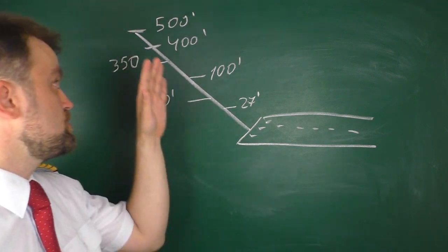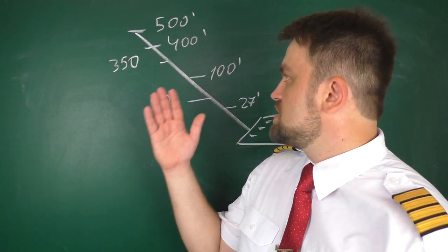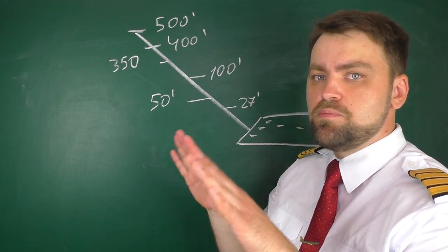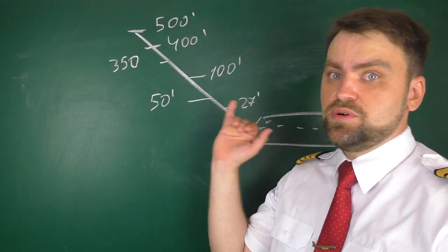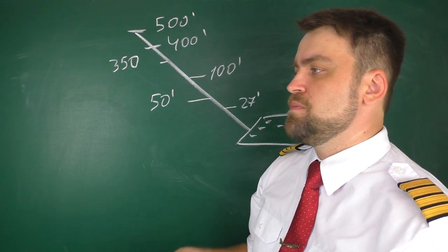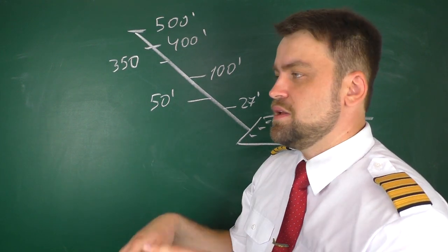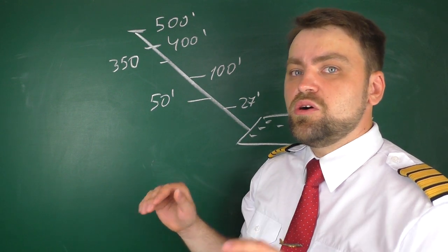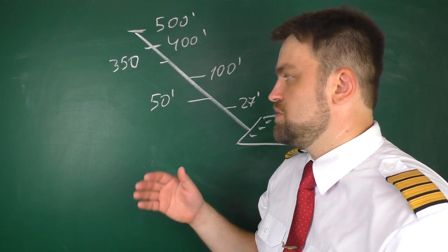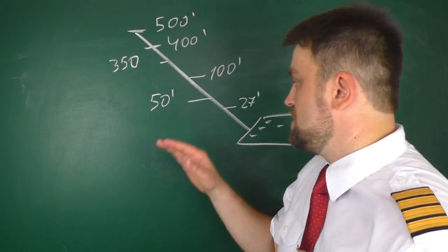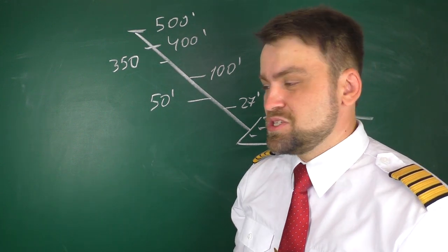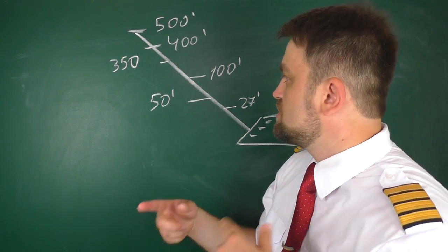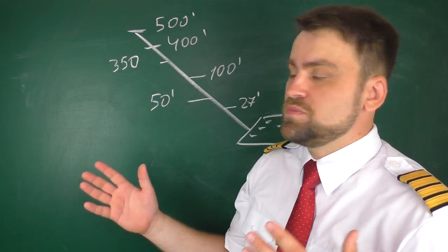Passing 400 feet, the stabilizer trim starts to trim back to create a pitch-up moment for the actual flare maneuver. At 50 feet, the flare maneuver begins — the autopilot trims the stabilizer up and applies a slight down elevator moment, holding it there. Then at 50 feet, the autopilot releases that elevator down moment, and the pitch-up stabilizer moment produces the flare. That is how the airplane lands automatically — with the help of stabilizer trim.